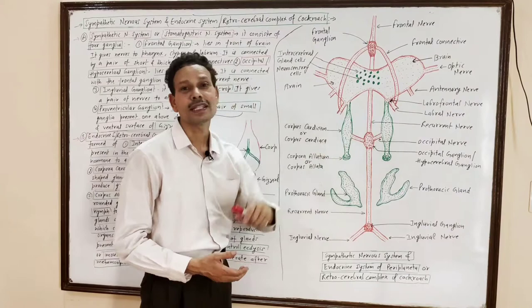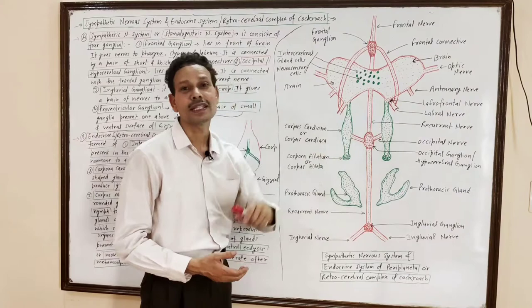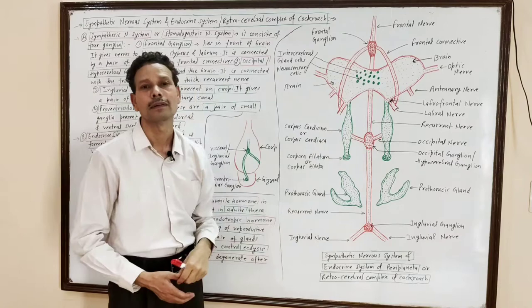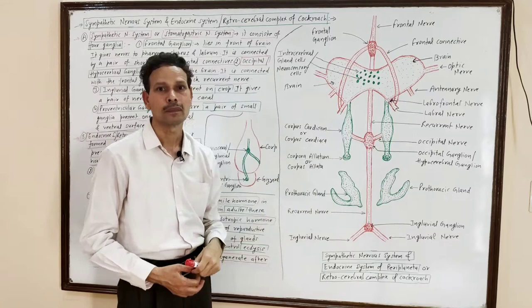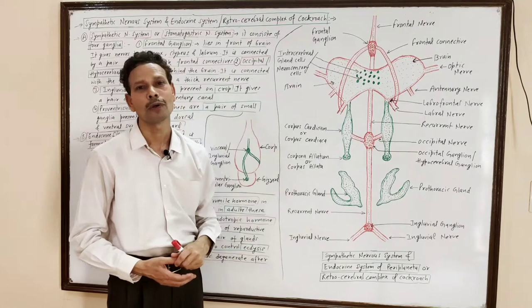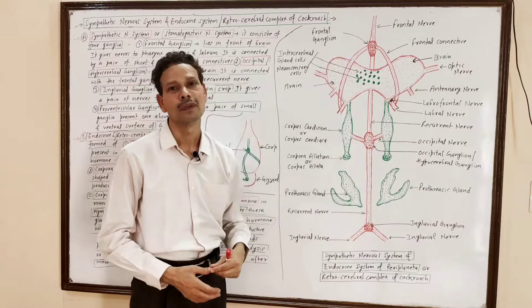The endocrine glands which are elongated rod-shaped structures lying just behind the brain are named corpus cardiacum, or corpus cardiaca. These corpus cardiaca secrete another important hormone — a growth hormone — that controls the metabolism and growth of the developing cockroach.